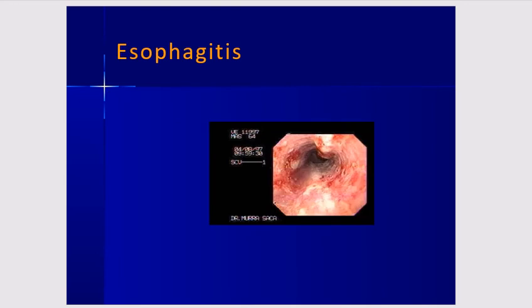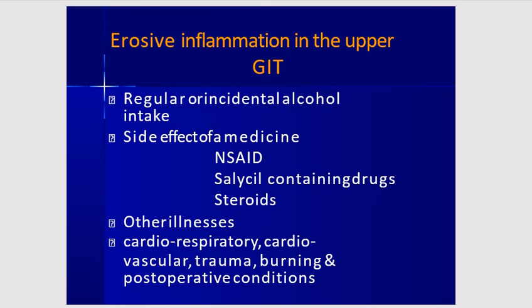Esophagitis is seen on endoscopy. Erosions in the GI tract are associated with alcohol intake, NSAIDs, salicylate-containing drugs, and steroids. Other contributing conditions include cardiorespiratory illness, vascular trauma, burns, and post-operative states.